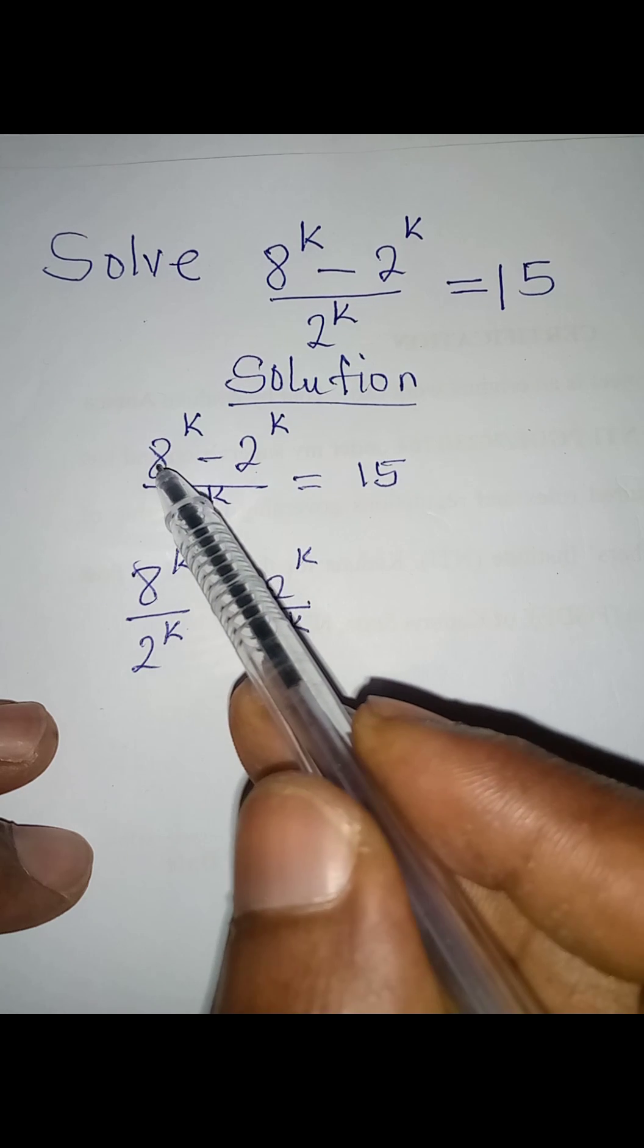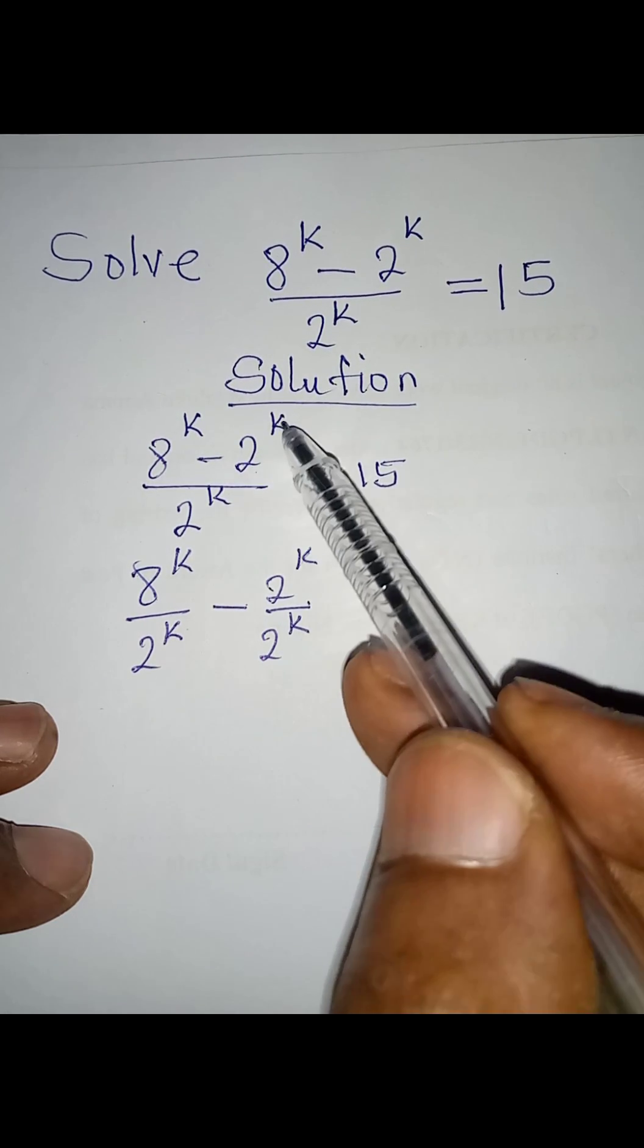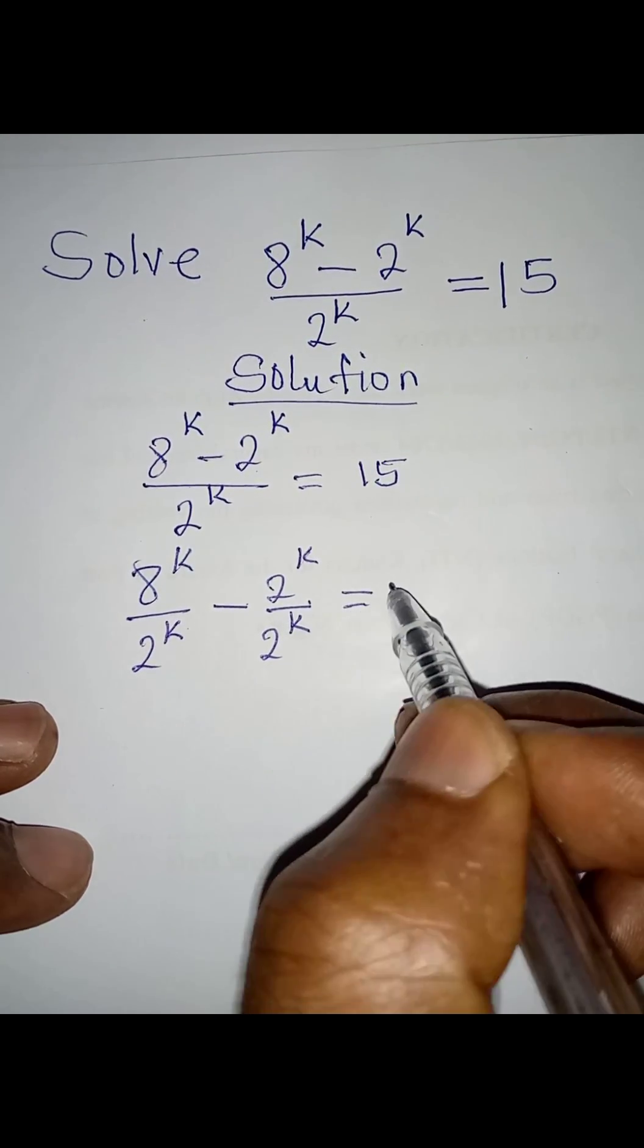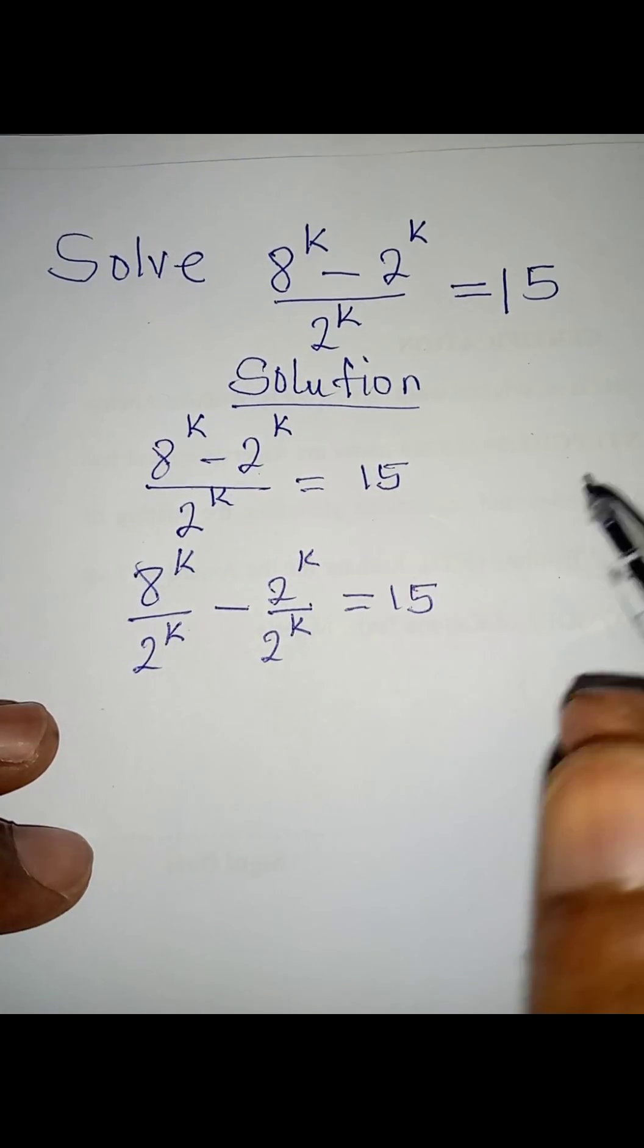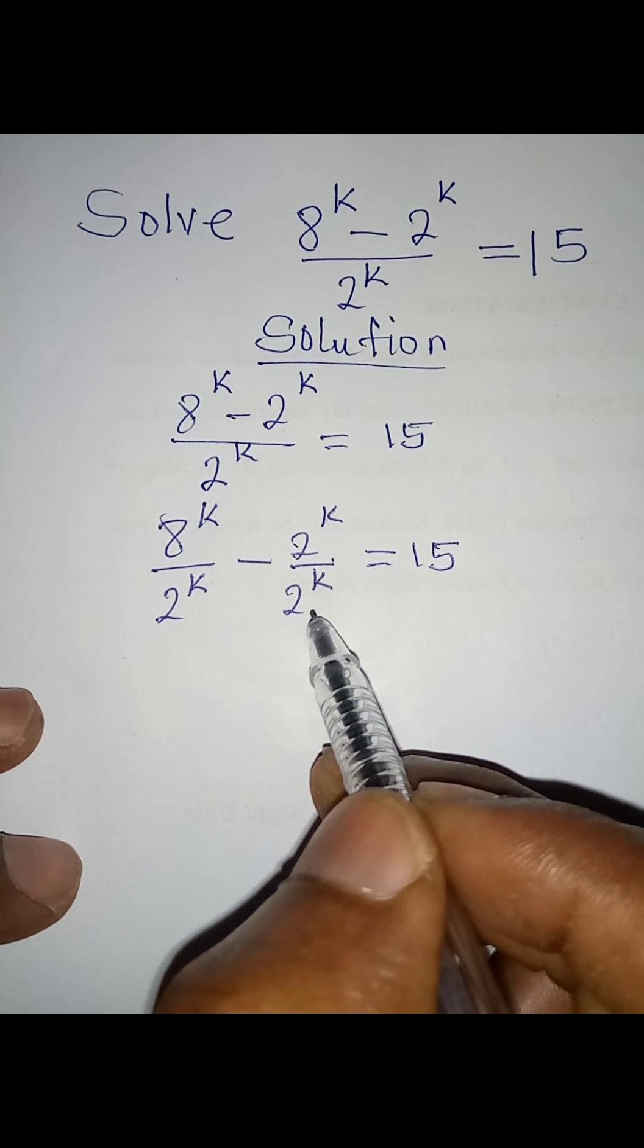Because this 2 to the power k is working for 8 to the power k and it also works for 2 to the power k in the numerator. So this is now equal to 15, then 2 to the power k over 2 to the power k is going to give us 1.